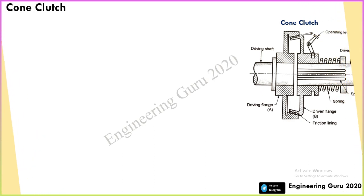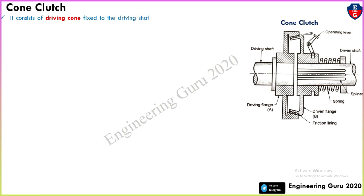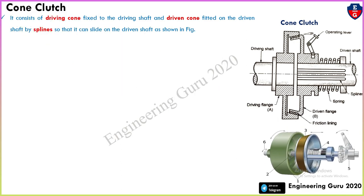This is a schematic diagram of a cone clutch. This is the driving shaft and driven shaft. This part is called the driving flange or driving cone. This part is called friction lining. This is the driven flange or driven cone. Other components include the spring, spline, and operating lever. It consists of a driving cone fixed to the driving shaft and a driven cone fitted on the driven shaft by spline.